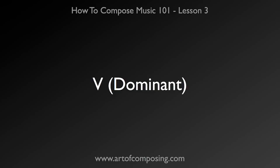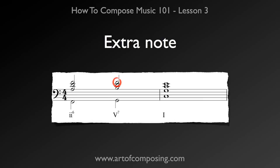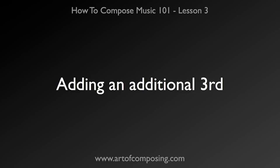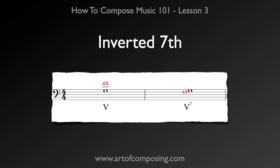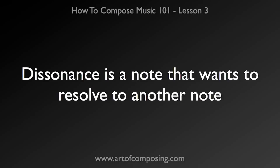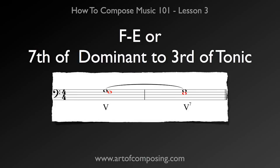Another thing that was different is the V chord had an extra note. This note, the F, is known as the seventh. It's built by adding one more additional third to the G major triad, still using C major diatonic harmony. Listen to the difference between a plain major triad and a seventh chord. The seventh, if you were to invert it, would only be a whole step away from the root of the chord. This gives it a certain dissonance. Our definition of dissonance at this point is a note that wants to resolve or move to another note. Specifically, the F has a tendency to move to E. So the seventh of the dominant, which is also the fourth of the tonic, wants to move to the third of the tonic. This is a very strong relationship, and you see it all over music.